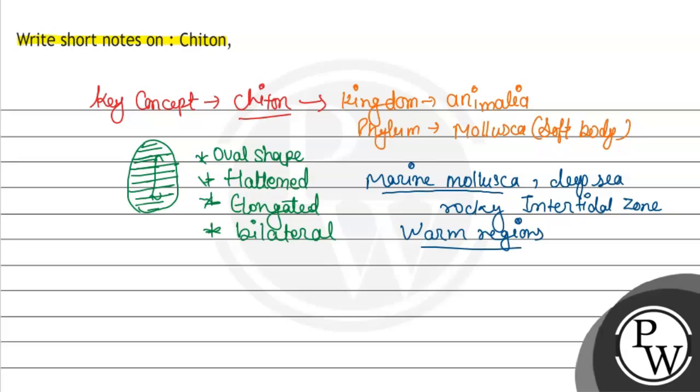Mollusks are also important because it is a primary consumer of marine plants, like the algae. Its common name is green chiton.